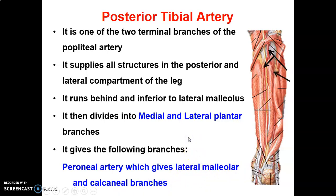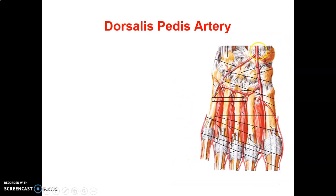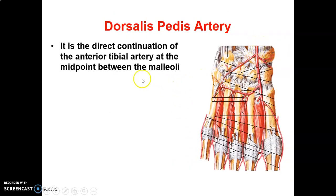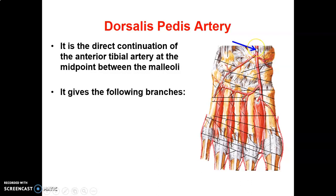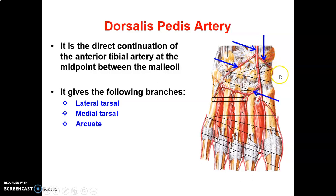The dorsalis pedis artery is a continuation of the anterior tibial artery at the midpoint between the lateral and medial malleoli. The branches of the dorsalis pedis include a lateral tarsal branch, a medial tarsal branch, an arcuate branch, and a first dorsal metatarsal artery.